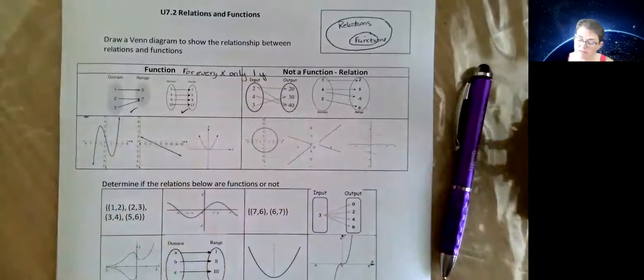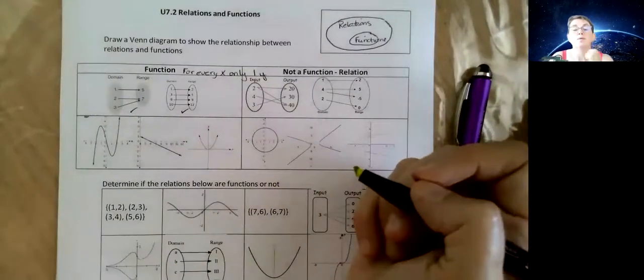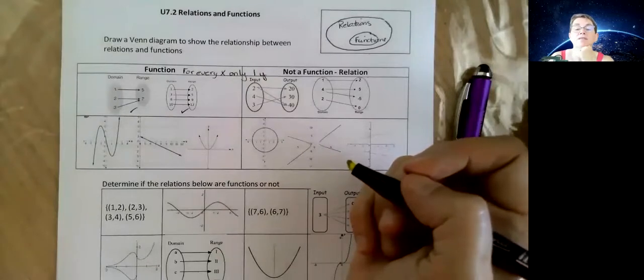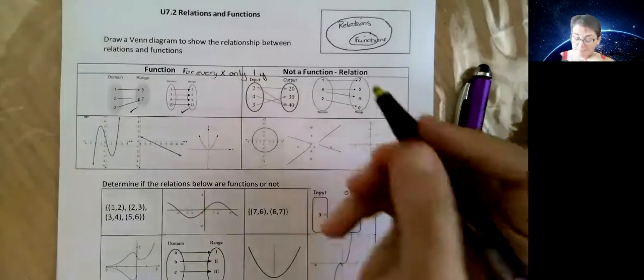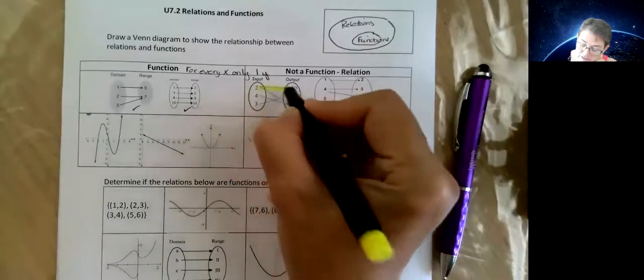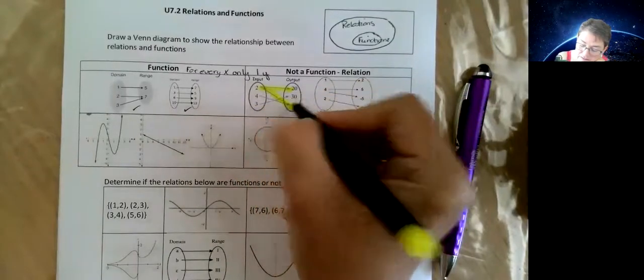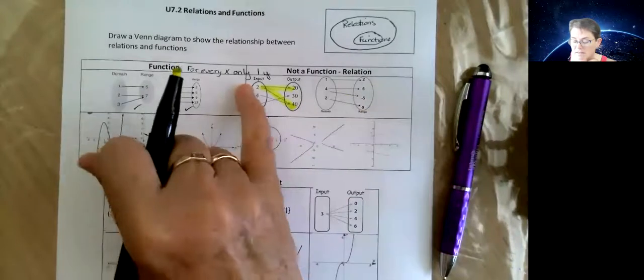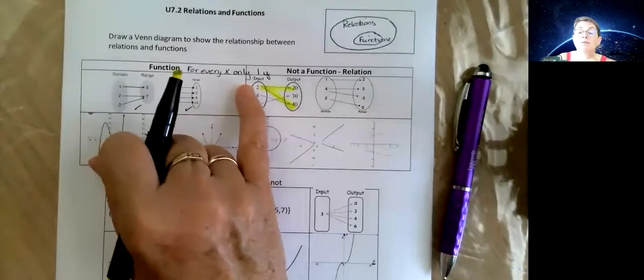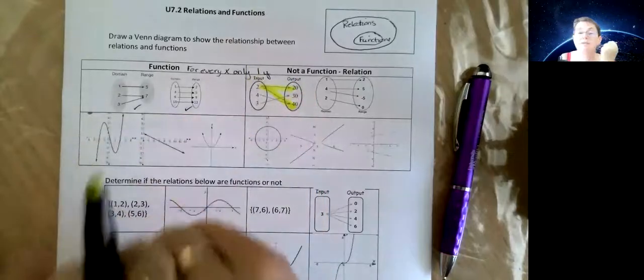And if you look at this one, where's the x that has matches with two numbers? Yeah, you saw it right away. Look, there's this x, this input. If you want to talk about domain, it goes with two different numbers, not a function.